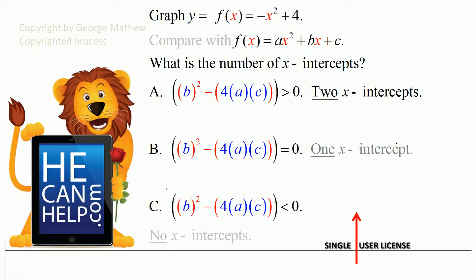Graph y equals f of x equals negative x squared plus 4. Compare with f of x equals ax squared plus bx plus c. What is the number of x-intercepts?